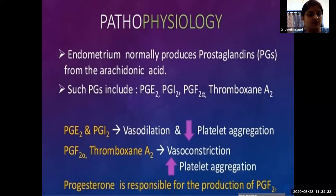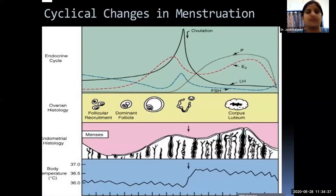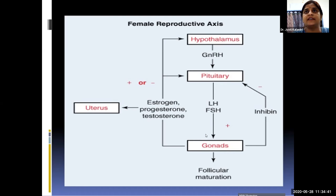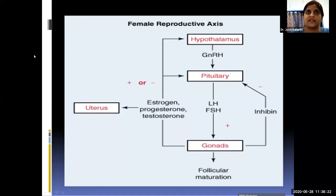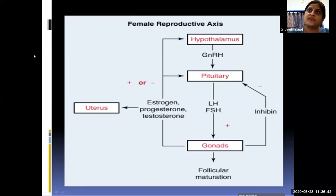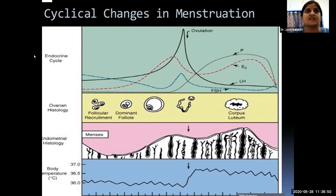FSH and LH act on the female gonads — the ovaries — stimulating estrogen and progesterone production. Estrogen causes endometrial proliferation in the pre-ovulatory phase. Estrogen and progesterone provide negative feedback to the pituitary and hypothalamus. The gonads also secrete inhibin, which gives negative feedback to the pituitary. Body temperature drops by 0.5 degrees at ovulation — this is the basal body temperature (BBT) chart.